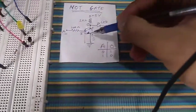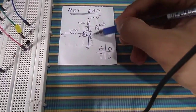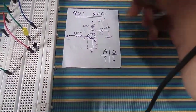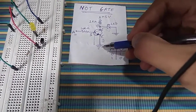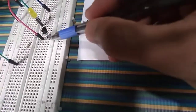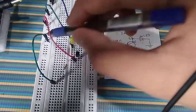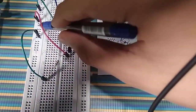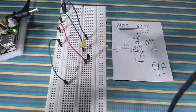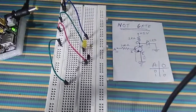The emitter of this transistor is directly connected to the ground. The third pin of this transistor is connected to this red wire, which goes to the negative terminal — that is the ground for the breadboard.